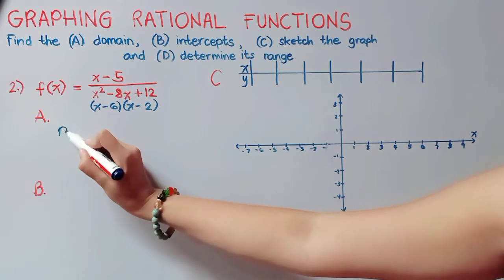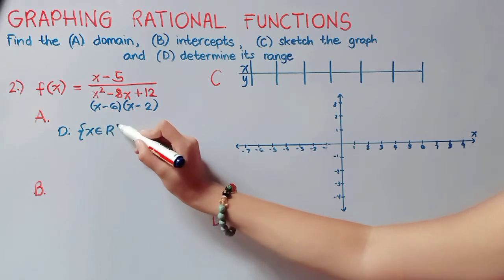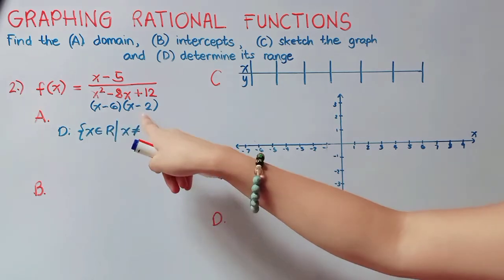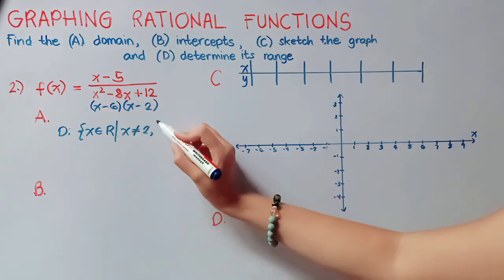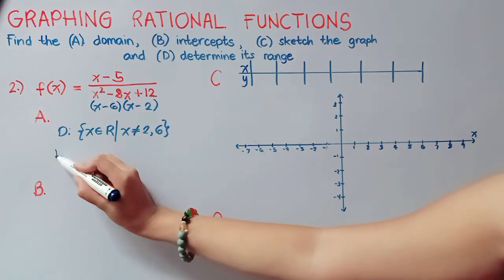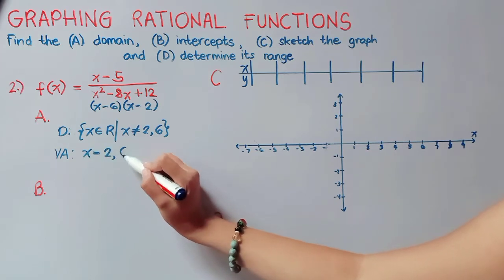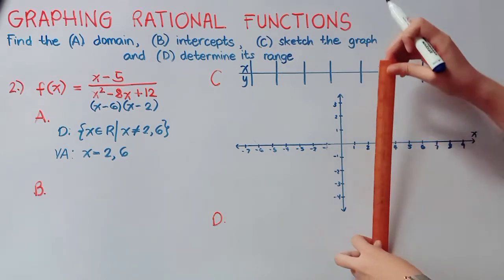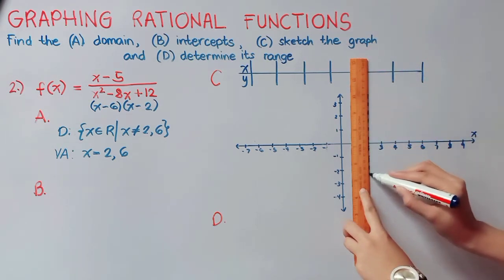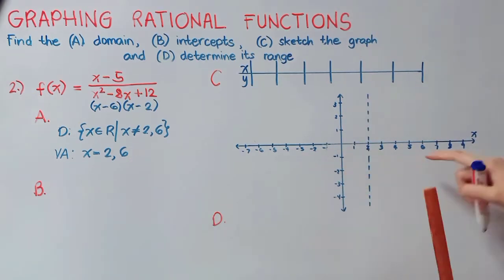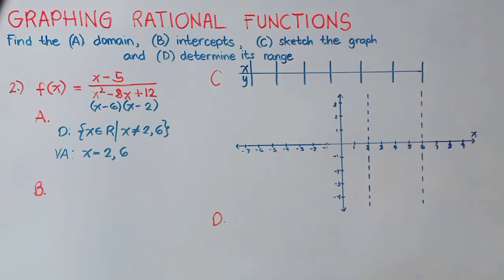Our domain is all real numbers except those values which will make our denominator zero, which are positive 2 and positive 6. Our vertical asymptotes are x equals 2 and x equals 6. Let us plot those asymptotes: first x equals 2, and the other one x equals 6.